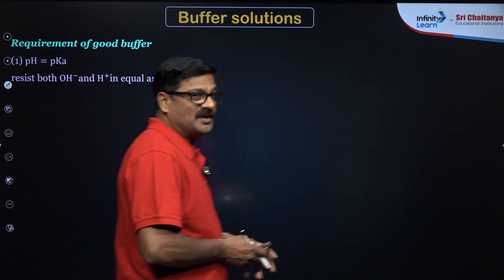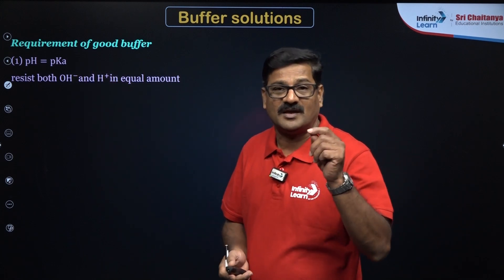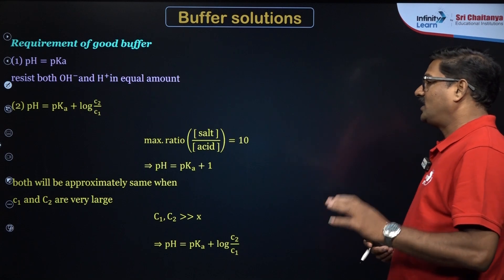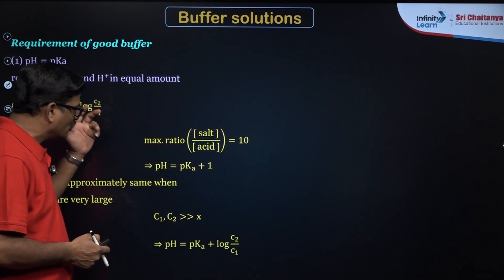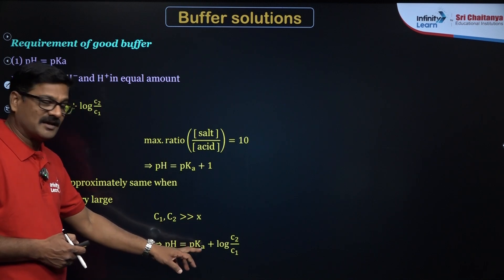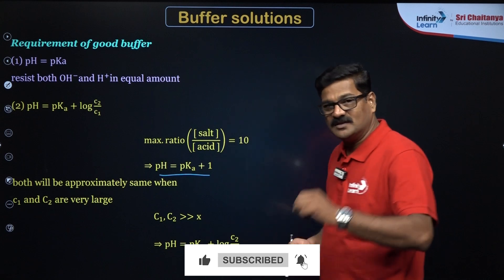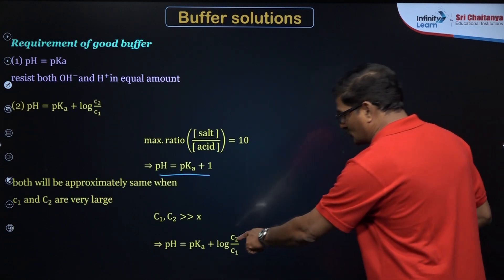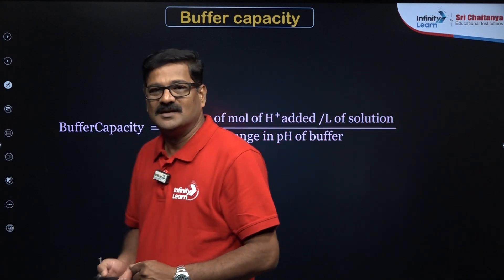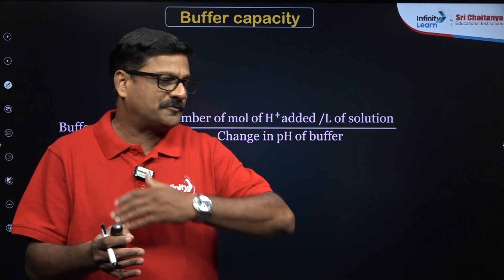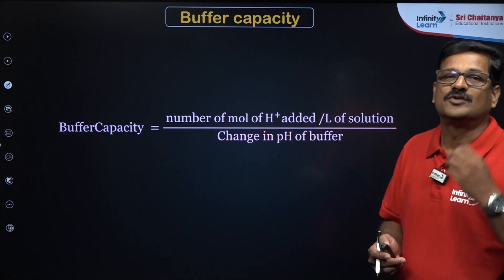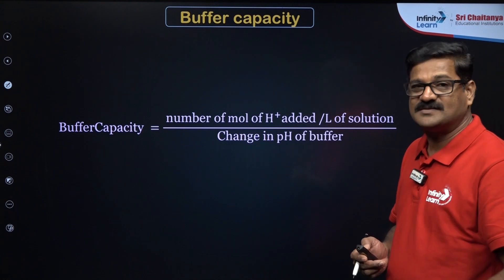A good buffer should have a pH value nearly equal to the pKa of the acid being used, so it can resist both OH⁻ and H⁺ equally. Using pH = pKa + log(C2/C1): if C1 and C2 concentrations are both much greater than X (the amount of acid or base added), pH remains approximately pKa + log(C2/C1). Buffer capacity is defined as the number of moles of acid or base that must be added to change the pH by one unit.